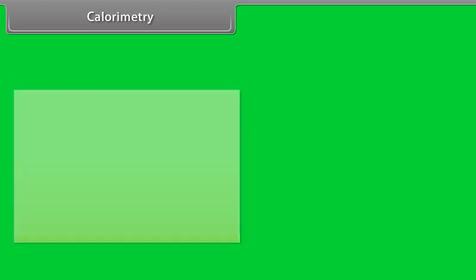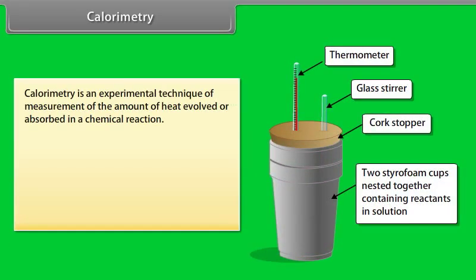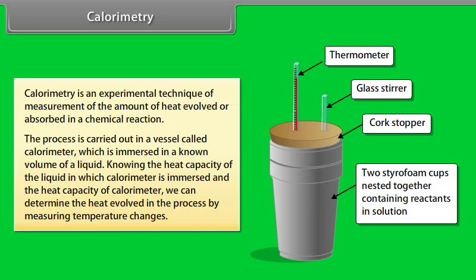Calorimetry is an experimental technique for measuring the amount of heat evolved or absorbed in a chemical reaction. The process is carried out in a vessel called a calorimeter, immersed in a known volume of liquid. By knowing the heat capacity of the liquid and the calorimeter, we can determine the heat evolved in the process by measuring temperature changes.